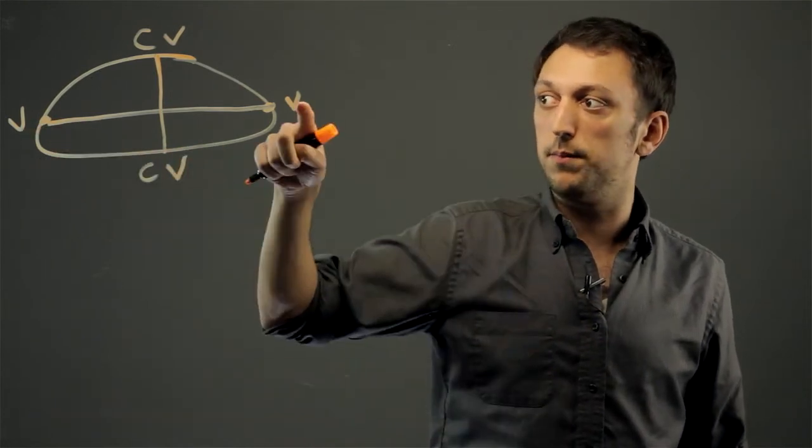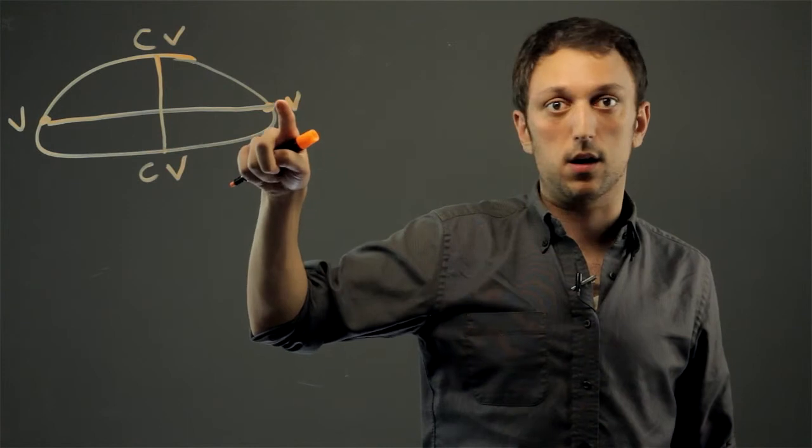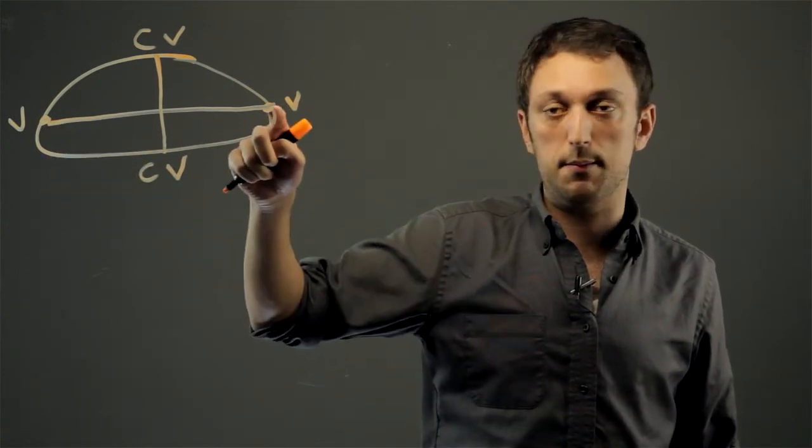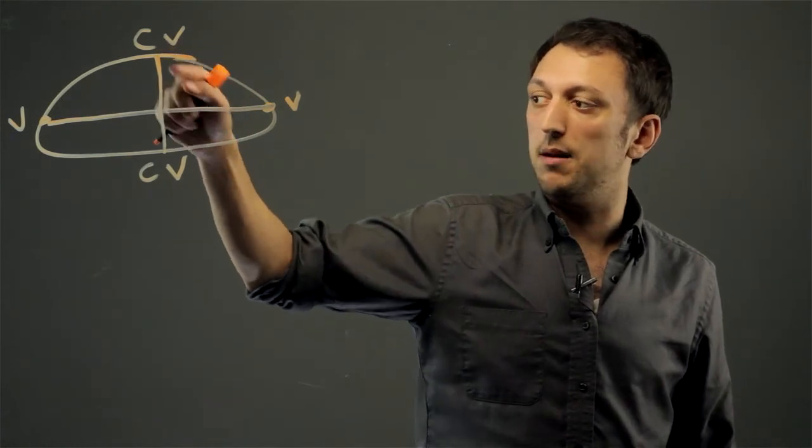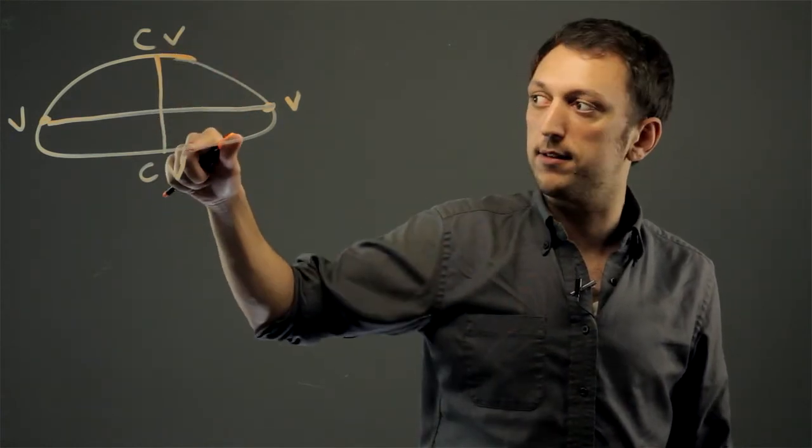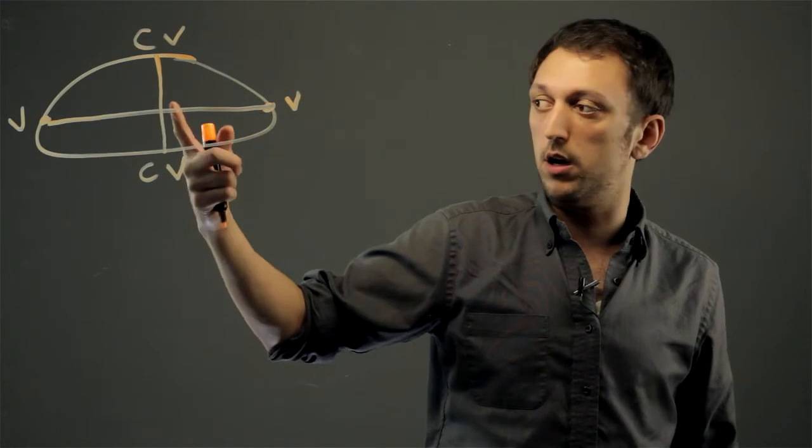The vertices are here and here, along the longer or the major diameter or major axis, and the co-vertices are the endpoints of the minor axis or the minor diameter of an ellipse.